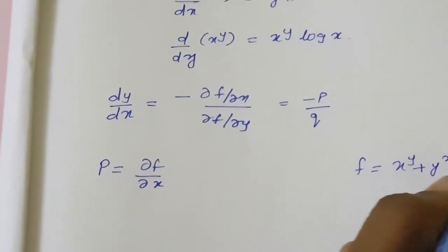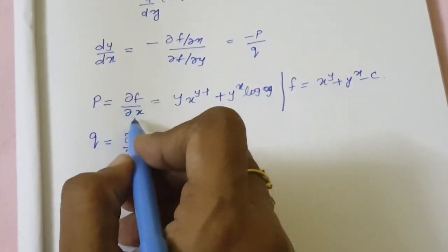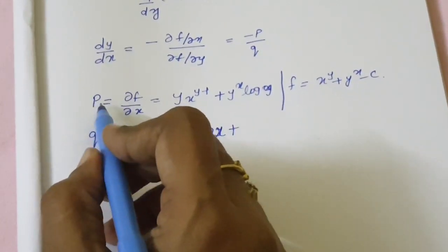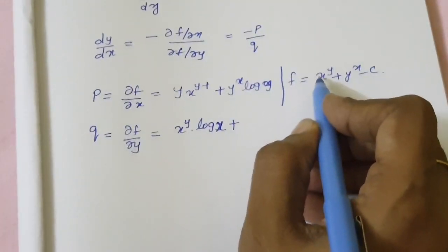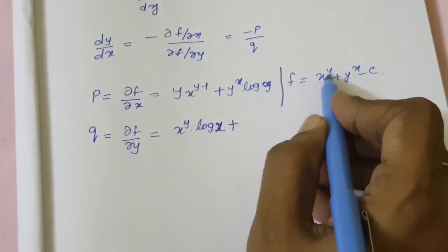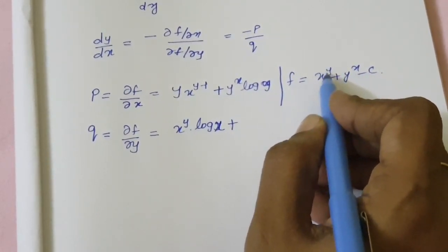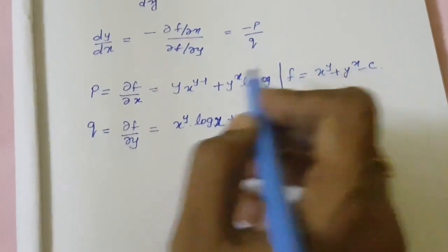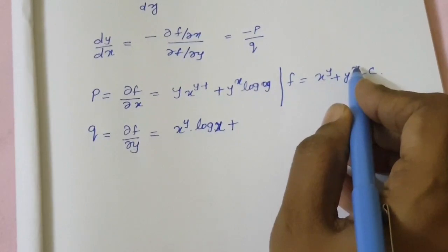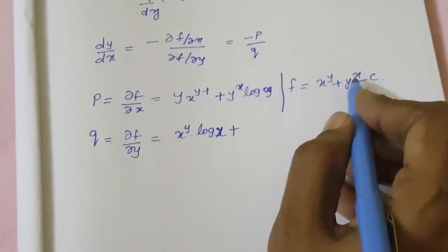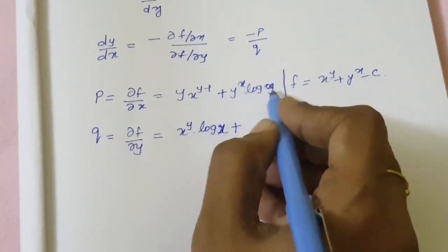Now find out the value of P, that is ∂f by ∂x. Differentiating f with respect to x: the first term x power y gives y into x power y minus 1. For the second term y power x, x occurs in the power, so differentiating y power x with respect to x gives y power x into log y.